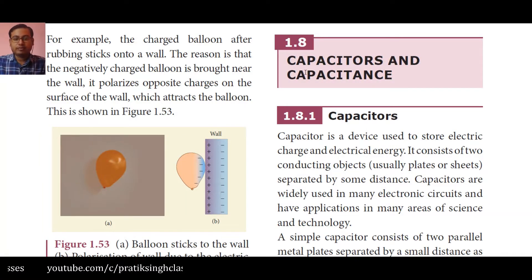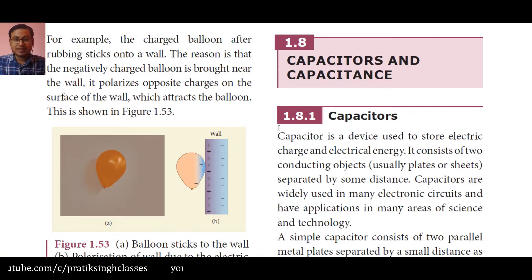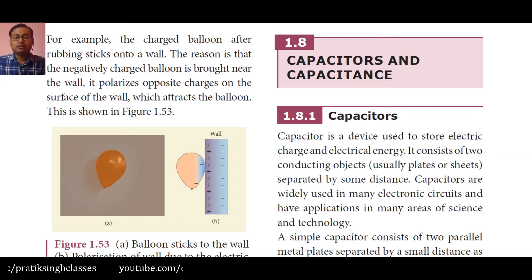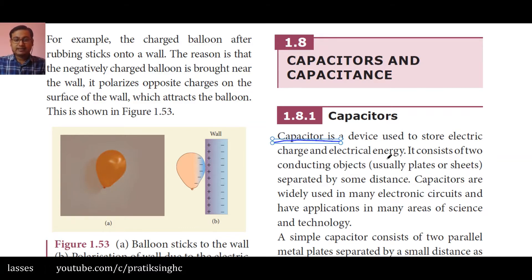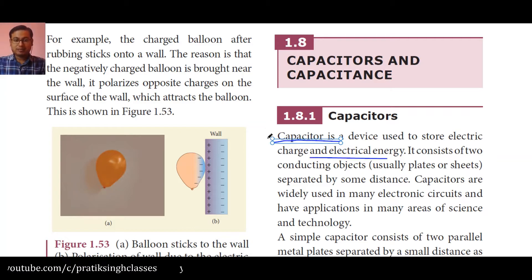Today's topic is Capacitors and Capacitance. Capacitors are very important in our day-to-day electrical and electronic devices. A capacitor is a device used to store electric charge and electrical energy. You might have seen batteries — primary and secondary batteries. Same thing applies to capacitors; they store electric charge and electrical energy. But there is some difference between a battery and a capacitor, which we will study later. For now, just remember that a capacitor works the same way as a cell or a battery does.